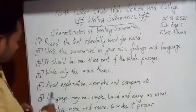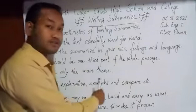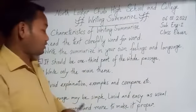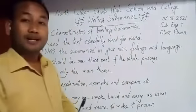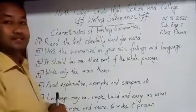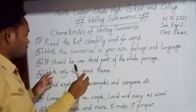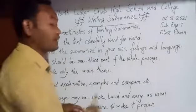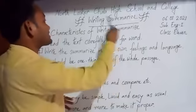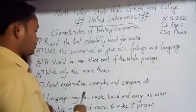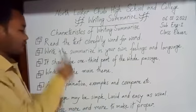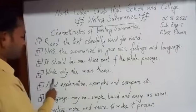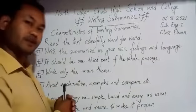Number five: avoid explanations, examples, and comparisons. There may be many explanations, examples, and comparisons in the passage, but you should not mention or use them in your summary, because they make the summary too long. To keep it attractive and concise, always avoid explanations, examples, and comparisons.